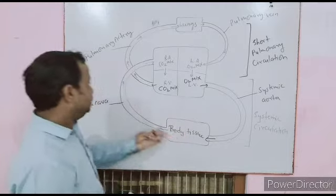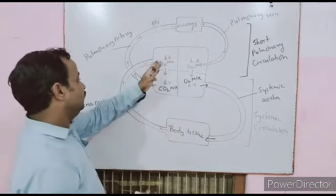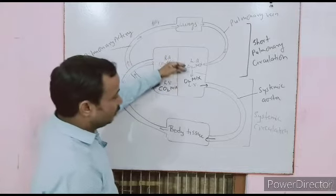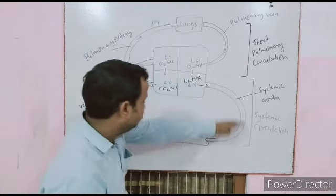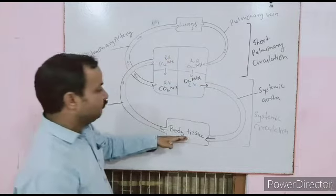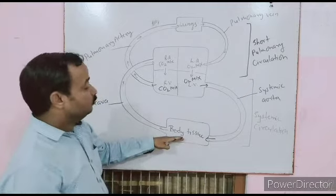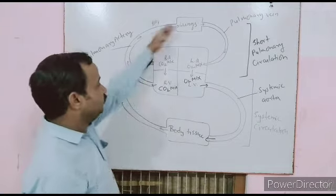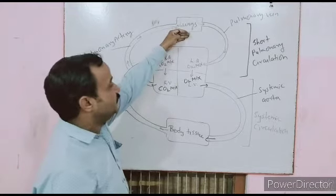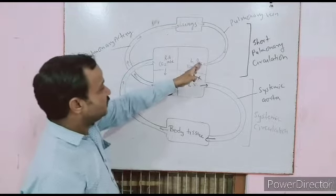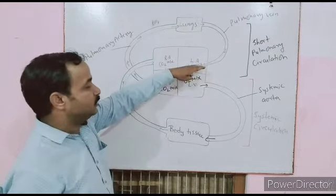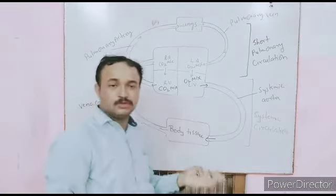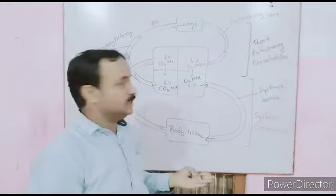Blood flows from the heart and oxygenated blood is sent to the body tissue. This is the systemic circulation. The heart sends blood to the lungs for purification, and lungs return purified blood to the heart — this is short pulmonary circulation.